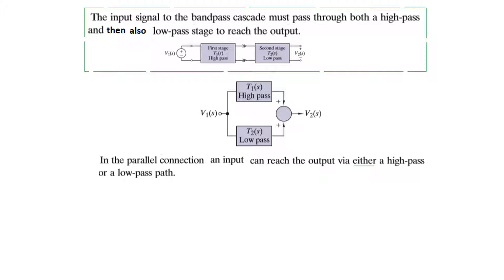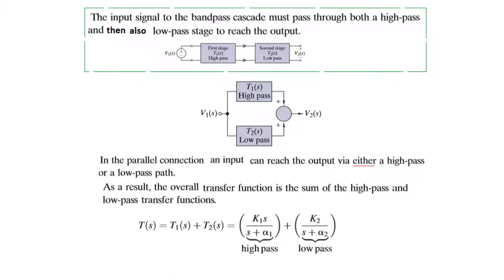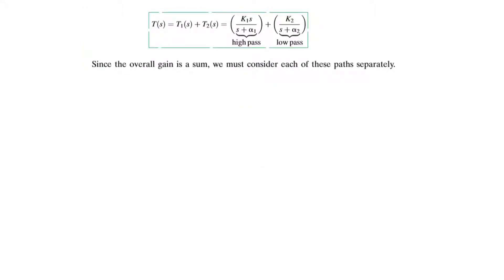The signal can go either through the high pass or through the low pass, and this way we realize the band stop filter. Since this is like an OR gate — either it can go through here or through here — the output will be the summation of the two, not multiplication as in the band pass case. So the output is the transfer function of the high pass plus the transfer function of the low pass.